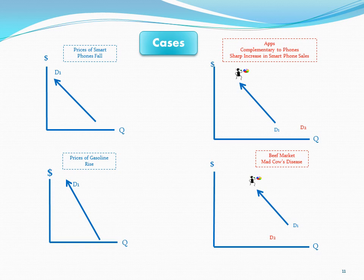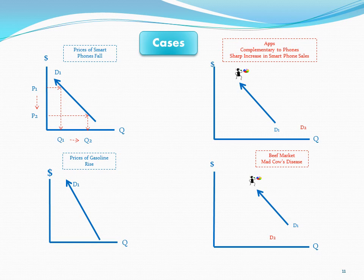Let's look at some cases. The prices of smartphones fall — how would you fill in this diagram? Here I've got a decline in price. I'd have to read from my demand curve what this translates into in terms of quantity. At the price of P1, I want Q1. When the price falls to P2, I want more quantity — Q2. So the quantity demanded increases. Price falls, quantity demanded increases — buyers are remixing their budget.